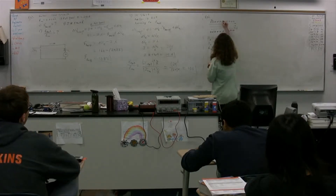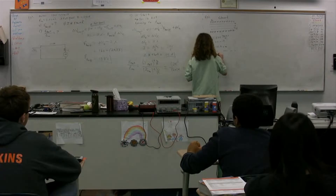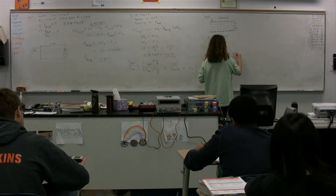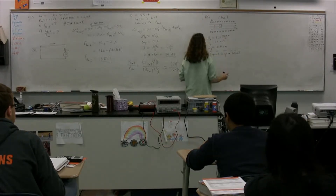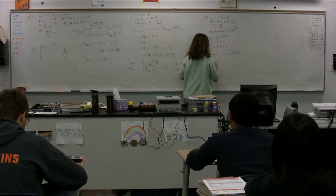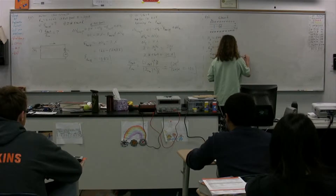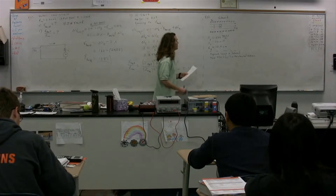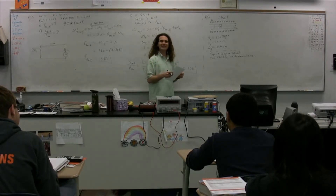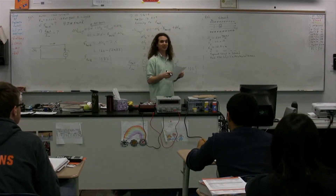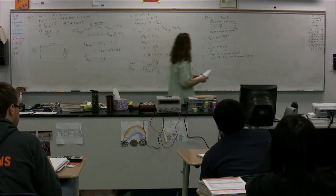Inside our solenoid, we are going to place a square loop. We're going to orient it like this, and we're going to turn that square loop via some mechanical means — we could have a crank, or a conveyor. It doesn't matter. This is a generator. We are taking mechanical energy and converting it to electrical energy because we are going to cause current to flow in this square loop.